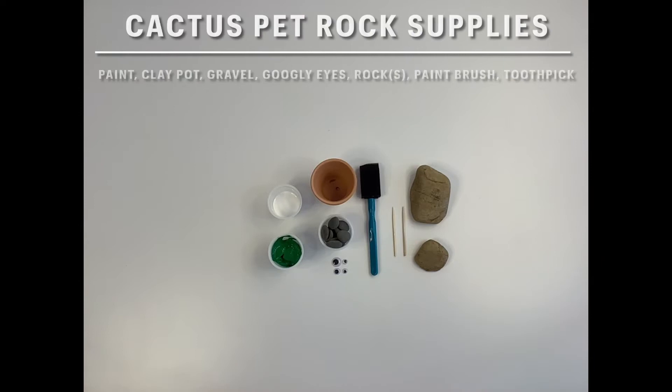In your kit you will find paint, a clay pot, gravel, googly eyes, a rock, a paintbrush, and a toothpick.